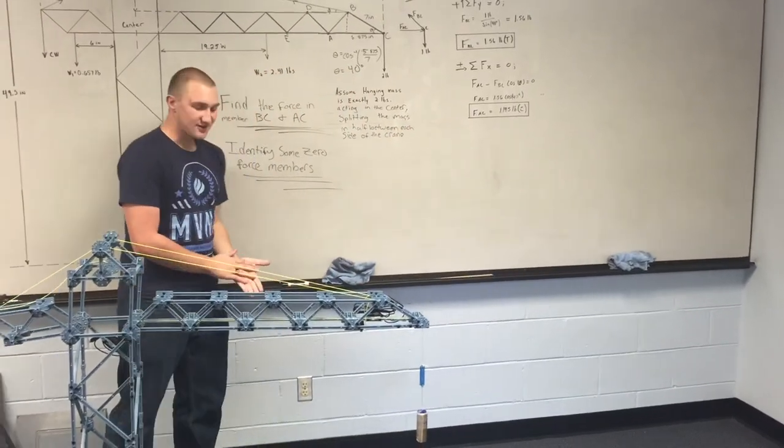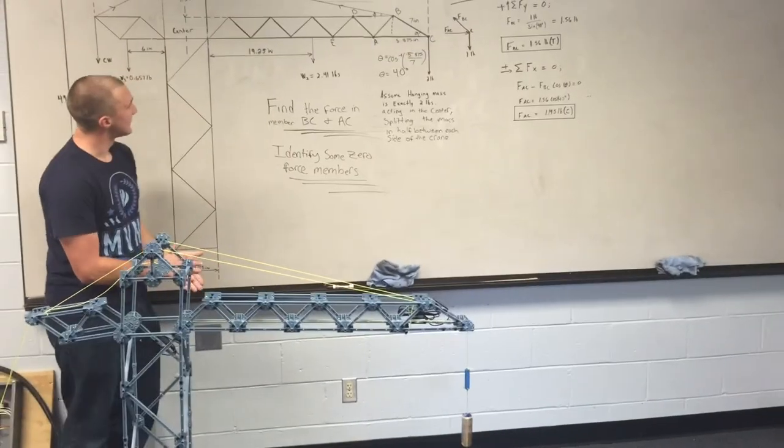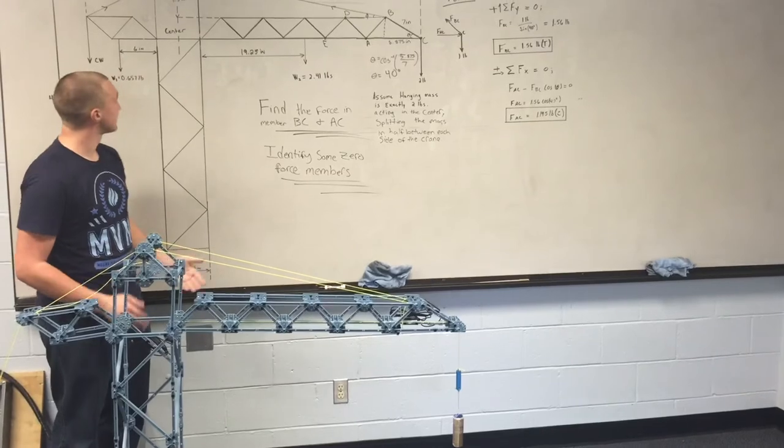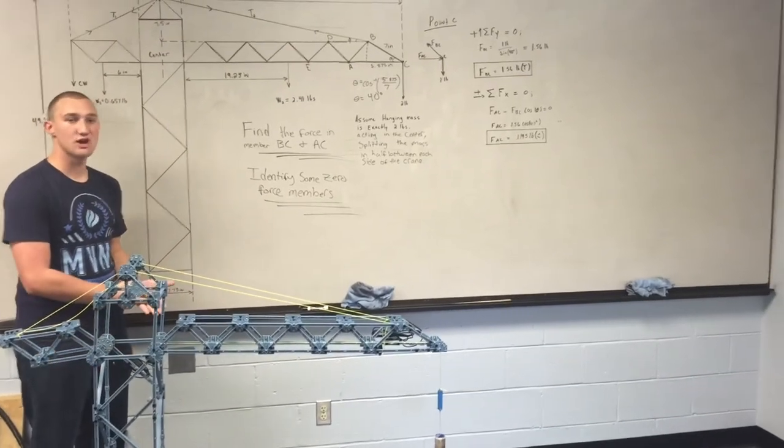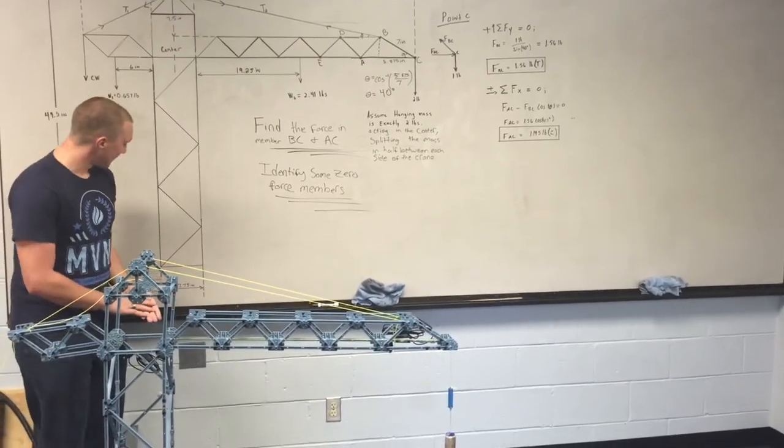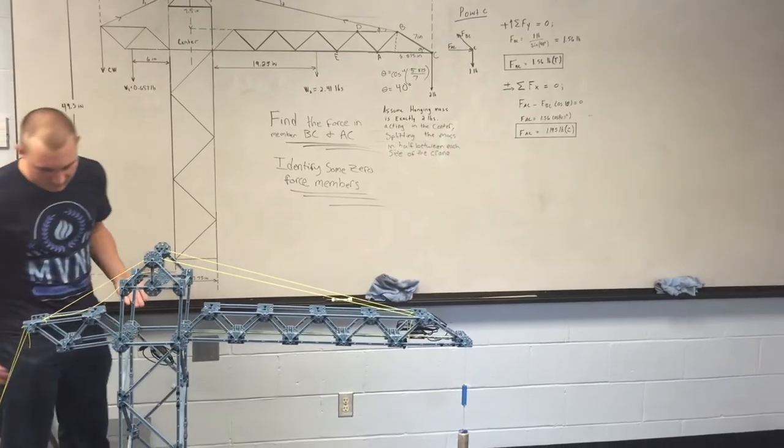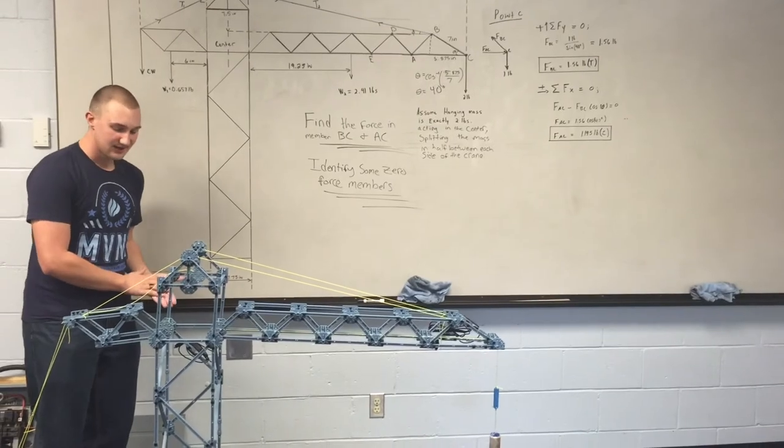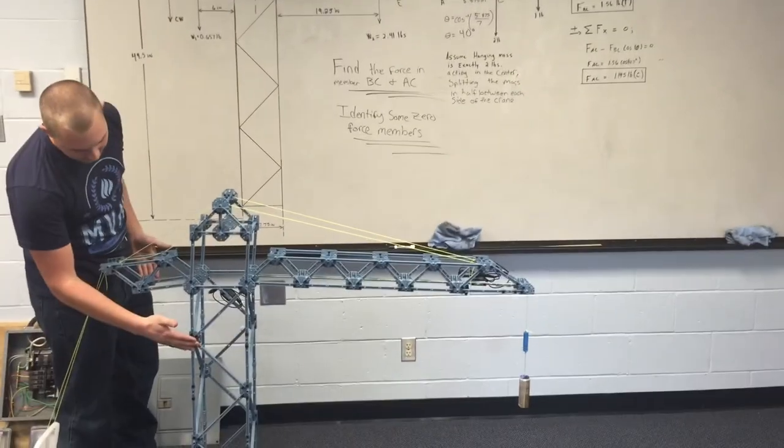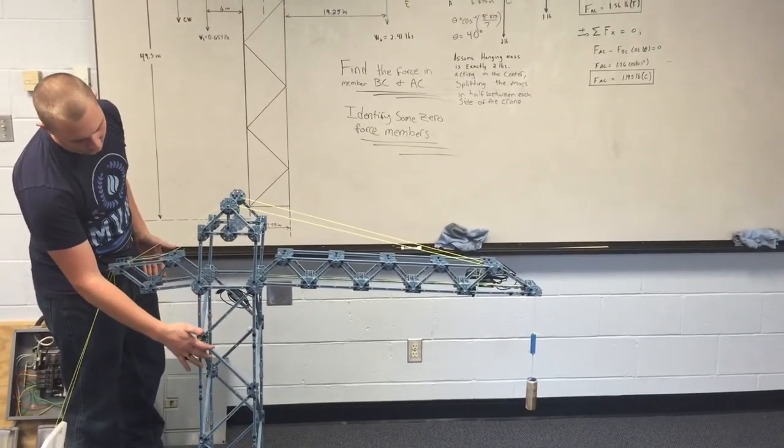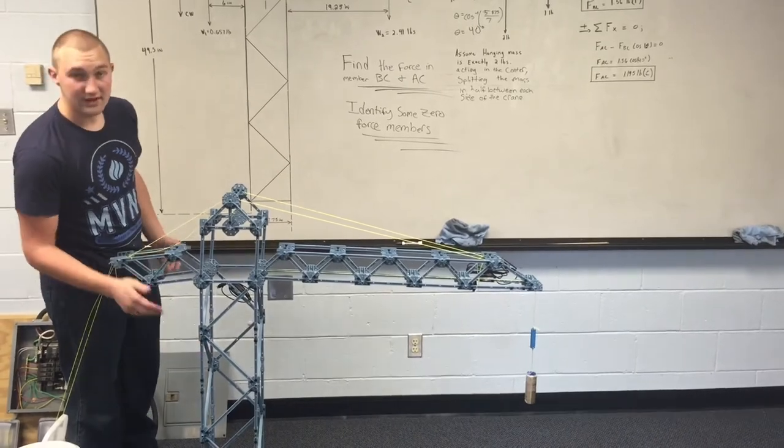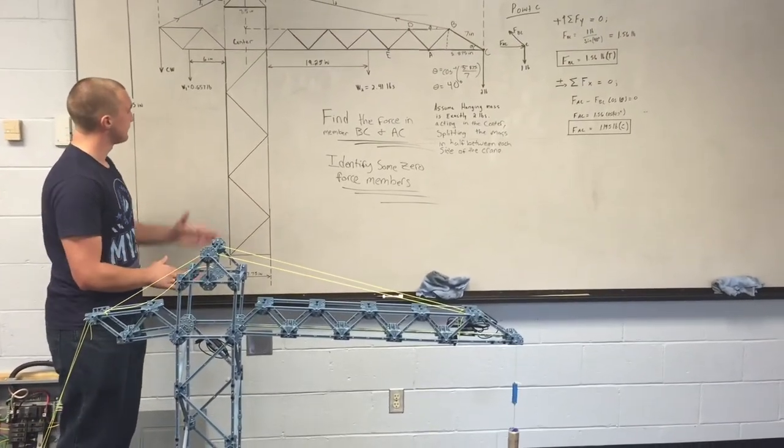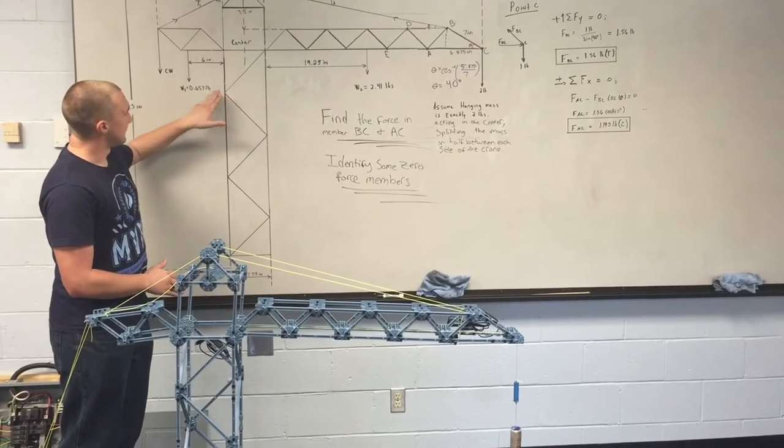And then we also analyzed this to figure out some examples of zero force members in this problem. We found that these members both acting along here would be zero force members because if you look at the points, they are the only members that are exhibiting a horizontal force at this point.